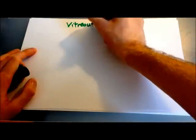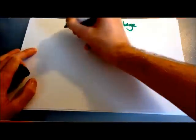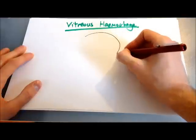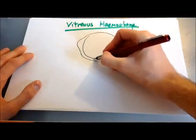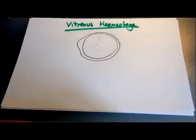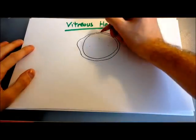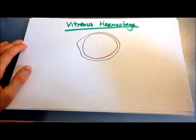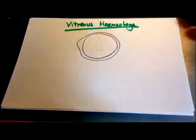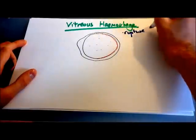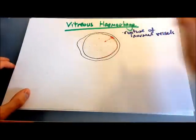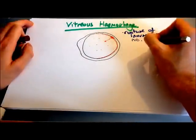Let's move on now to vitreous haemorrhage, which is bleeding into the vitreous humour at the back of the eye. Vitreous haemorrhage can occur for a few reasons. One of these is rupture of normal vessels on the surface of the retina — this can be in posterior vitreous detachment, retinal detachment, or central retinal vein occlusion. These rupture and bleed into the vitreous humour, causing the haemorrhage.